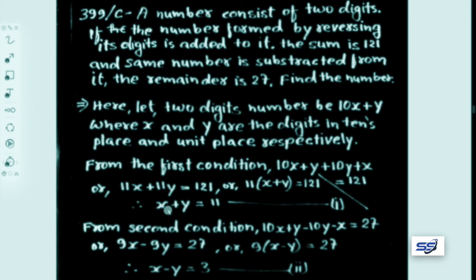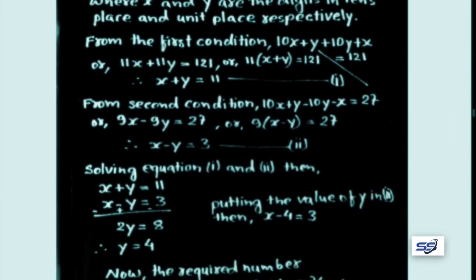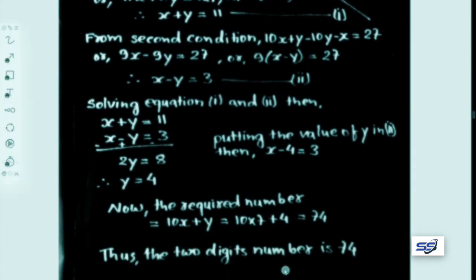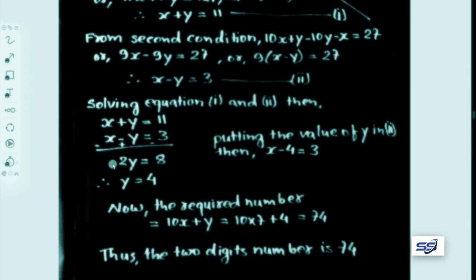Equation 1 is x plus y equals 11 and equation 2 is x minus y equals 3. Subtracting equation 1 from equation 2 with sign change: 2y equals 8, therefore y equals 4. Putting y equals 4 in equation 2: x minus 4 equals 3, therefore x equals 7.